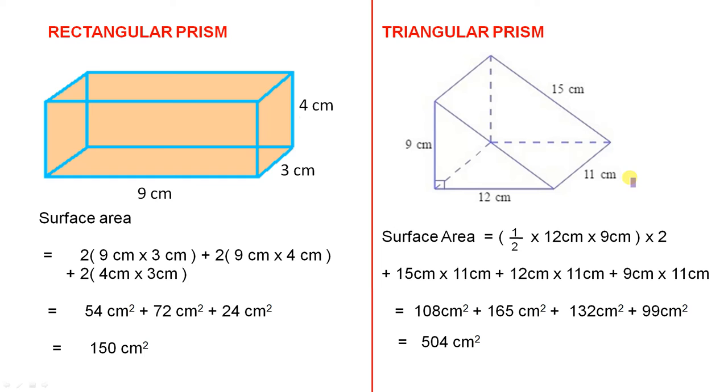Now, here is the triangular prism. So there's your triangle, there's your triangle, and they're joined by three lines. So the surface area will be, if we take this front triangle, half by 12 by 9, that's half the base times the perpendicular height. We multiply that by 2, because you also have a triangle there. Plus 15 centimetres by 11 centimetres, which is this slopey side here.